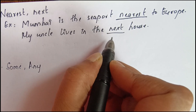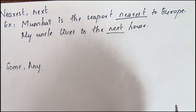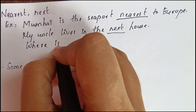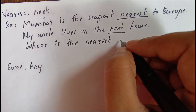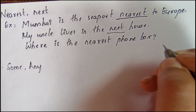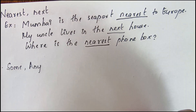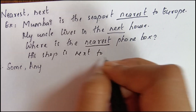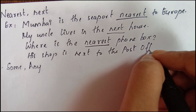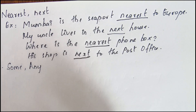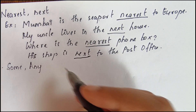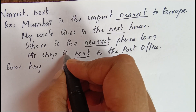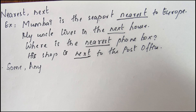So, next refers to order or sequence of things, while nearest indicates a short distance away. For example: 'Where is the nearest phone box?' means which phone box is at the shortest distance. But 'His shop is next to the post office' describes the position of the shop in a sequence of buildings.